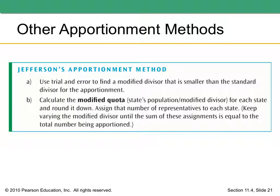The first thing we need to talk about is something called a modified quota. A modified quota is where you take the standard quota — please refer back to the notes if you don't remember what that is — and you adjust it according to what we need. These three different methods are each going to need something slightly different, so the modified quota is just taking the standard quota and adjusting it.